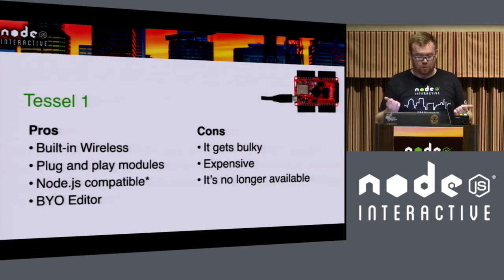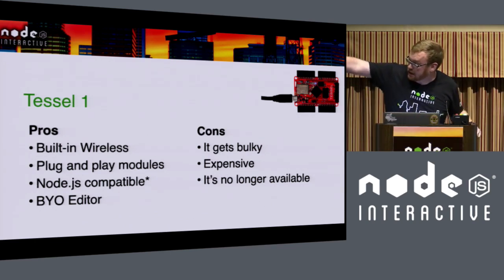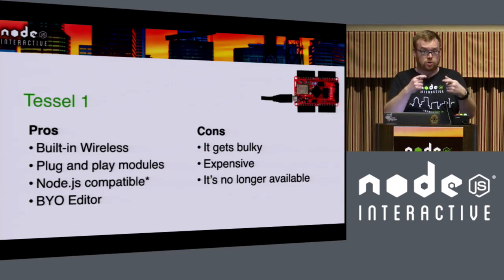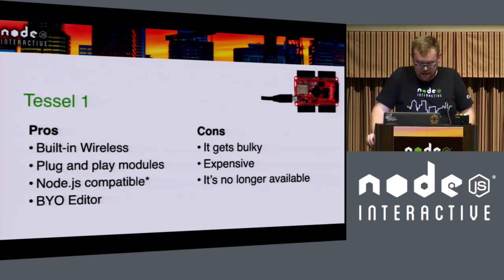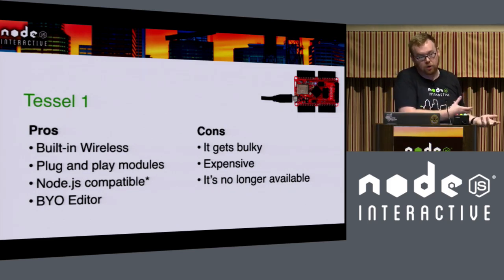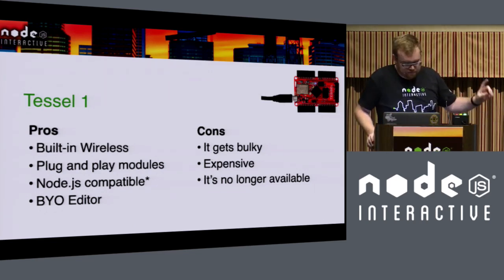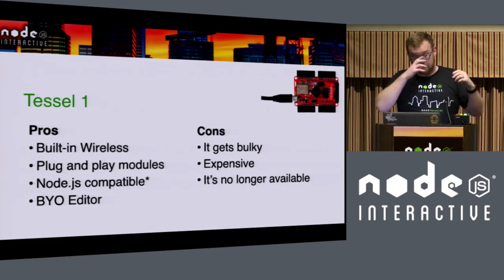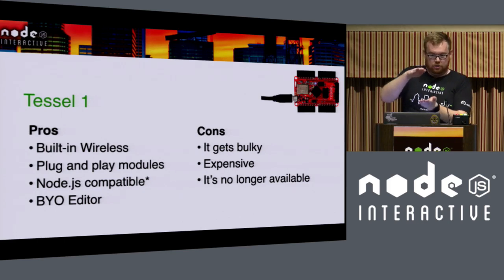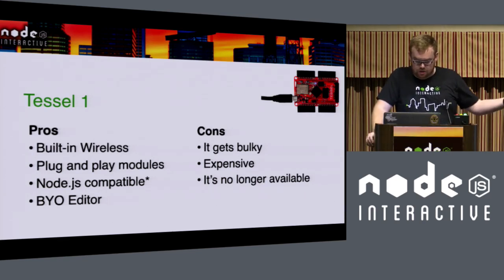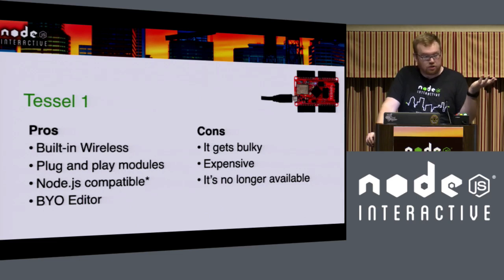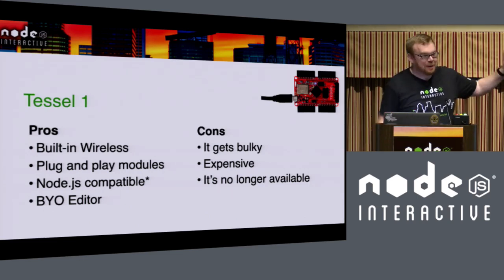The pros of the Tessel are built-in wireless, plug-and-play modules so you don't need to solder — which is great for beginners — and it's Node.js and NPM compatible with modules written in pure JavaScript, so you can bring your own editor and use modern development platforms. The cons are it can get bulky when plugging in all the different modules. It was expensive, and it's no longer available. But this is part of the history of where JavaScript and IoT are going.